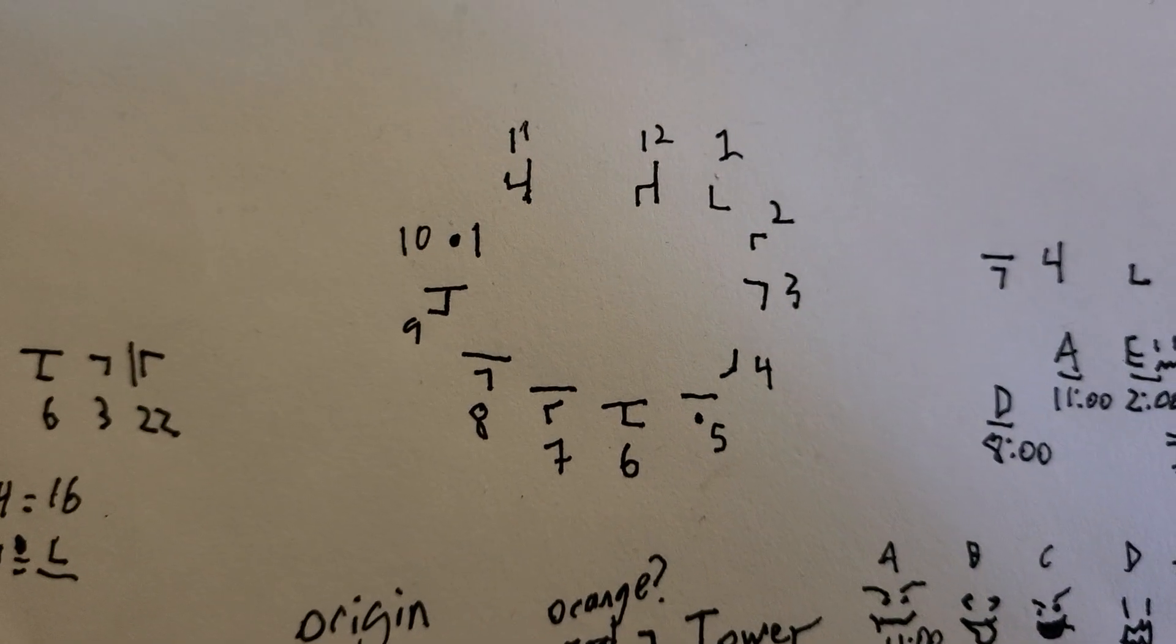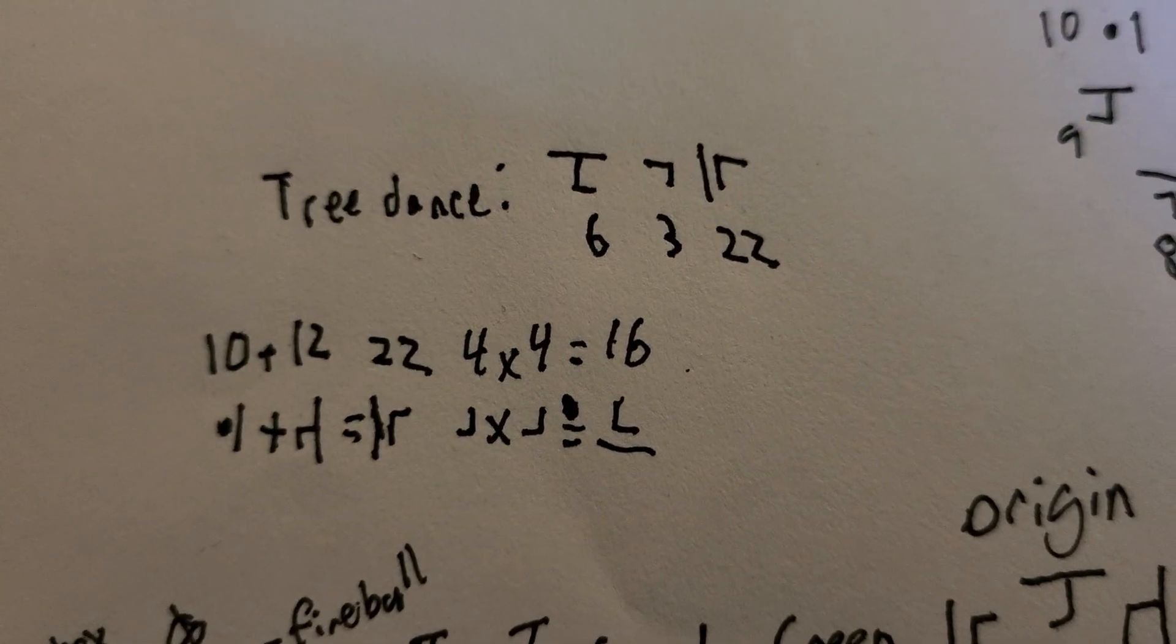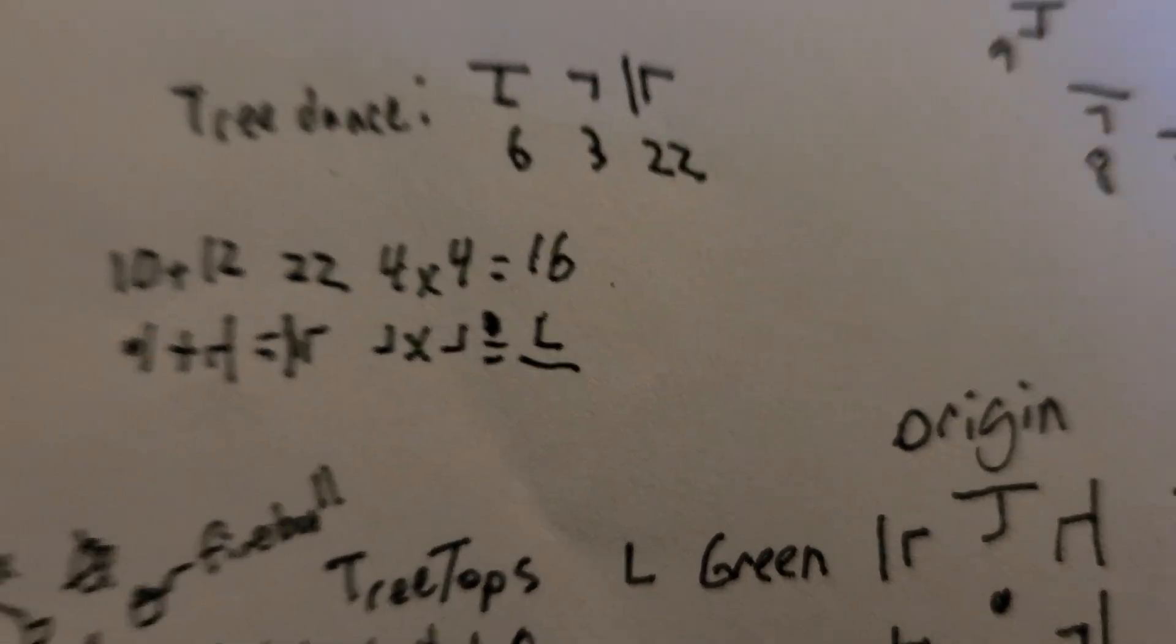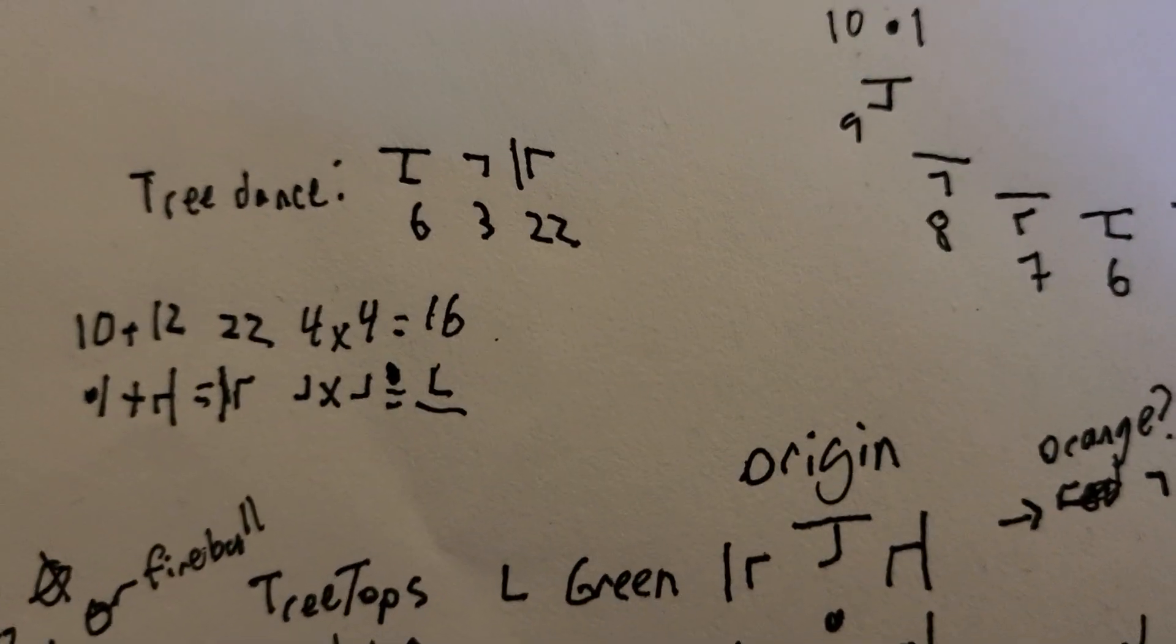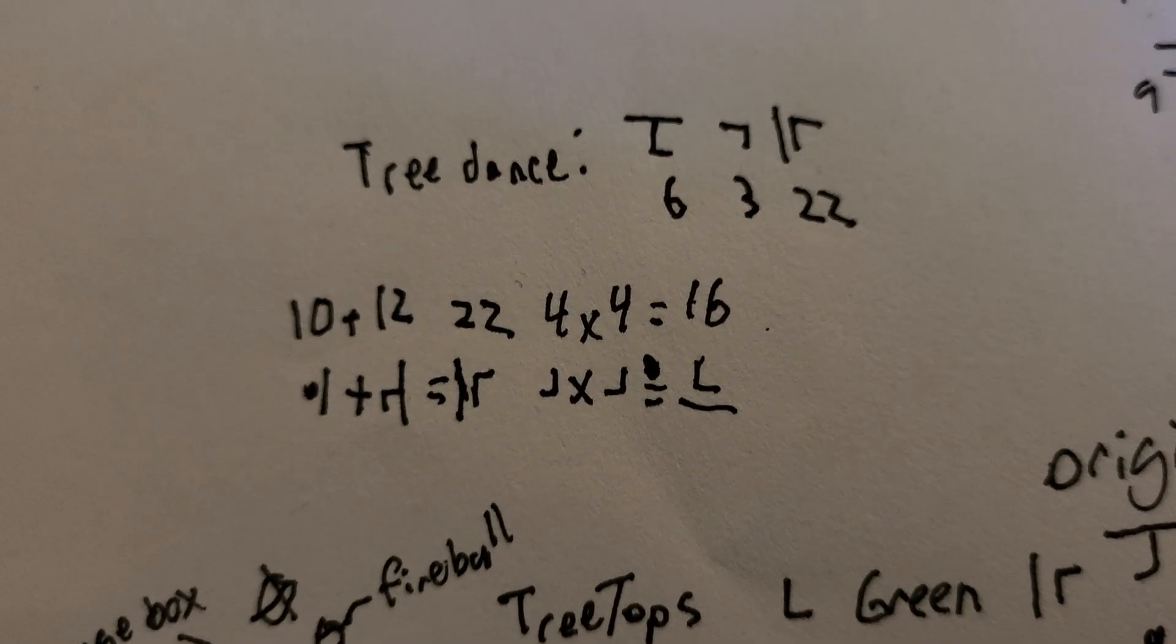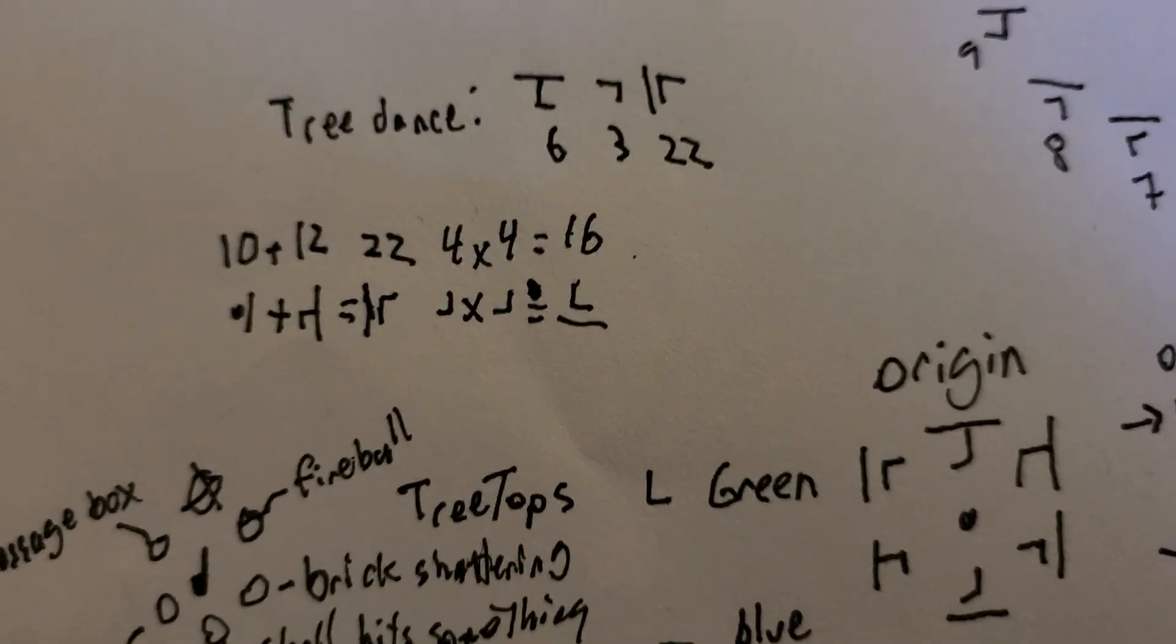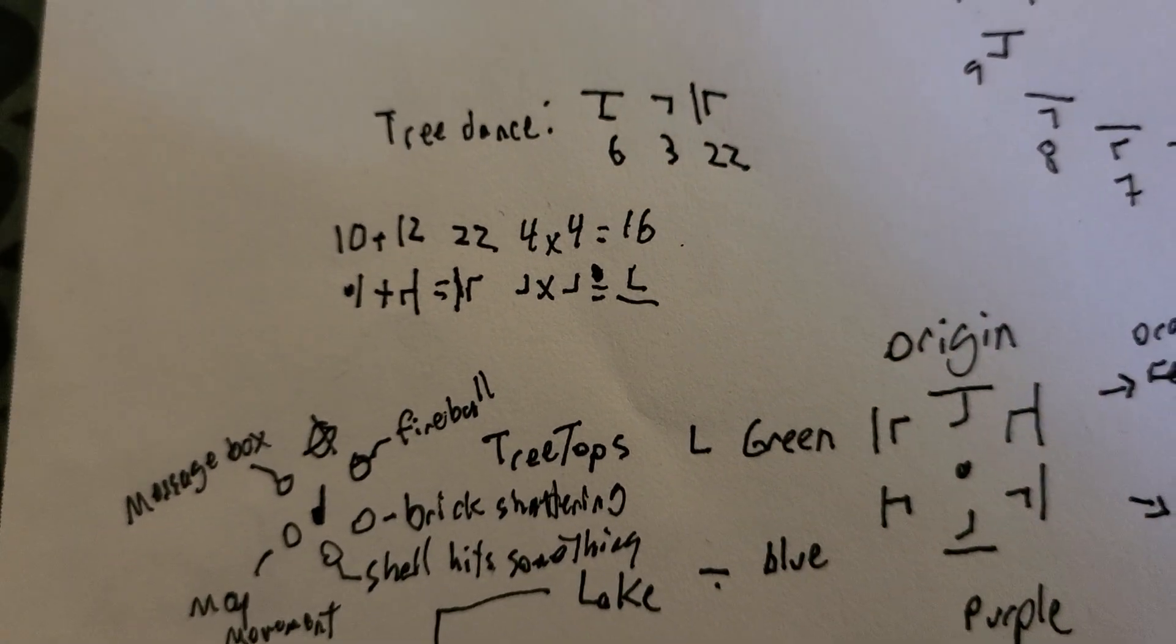We know just using this clock numbers all the way to fourteen. Remember our math—four times four is sixteen. Check it out: fifteen is the line with a dot above. We know all numbers up to nineteen. Also math, we got ten plus twelve is twenty-two.